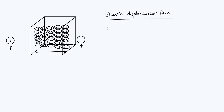Let's make this more quantitative. We start with one of Maxwell's equations: the divergence of the electric field is equal to the local charge density divided by the constant ε₀. In systems with dielectrics it's conventional to separate the charge density ρ into two parts: a free charge density ρ_f and a bound charge density ρ_b. The bound charge density ρ_b is any charge density resulting from the polarization of the material — the charge density arising from those unequal pluses and minuses induced in the material. The free charge density ρ_f is simply any charge density that is not due to polarization, such as the positive and negative point charges placed on either side of the dielectric in the diagram.